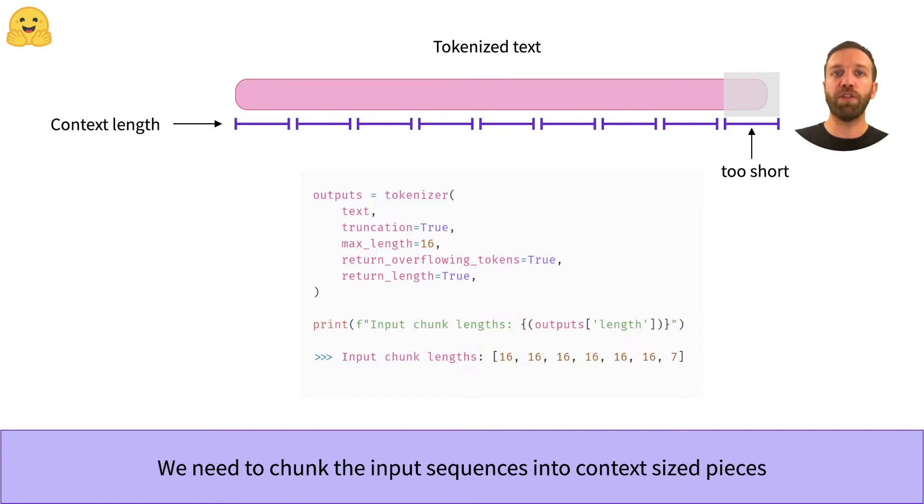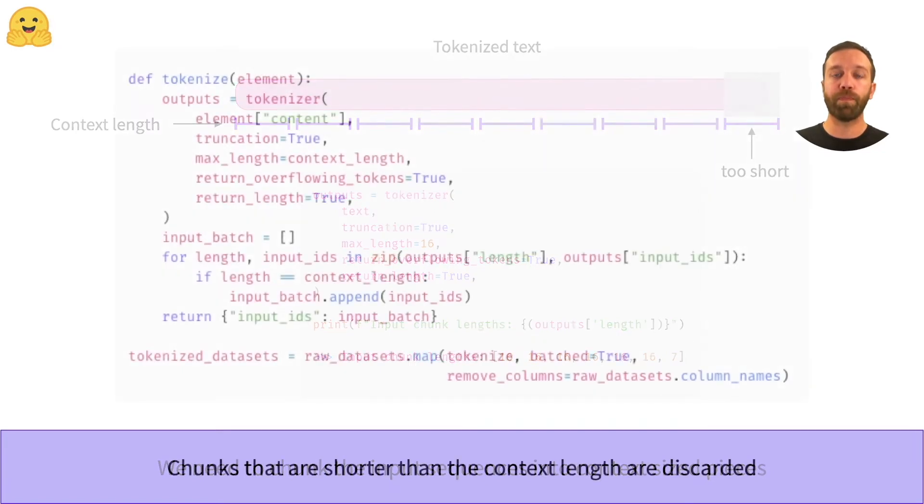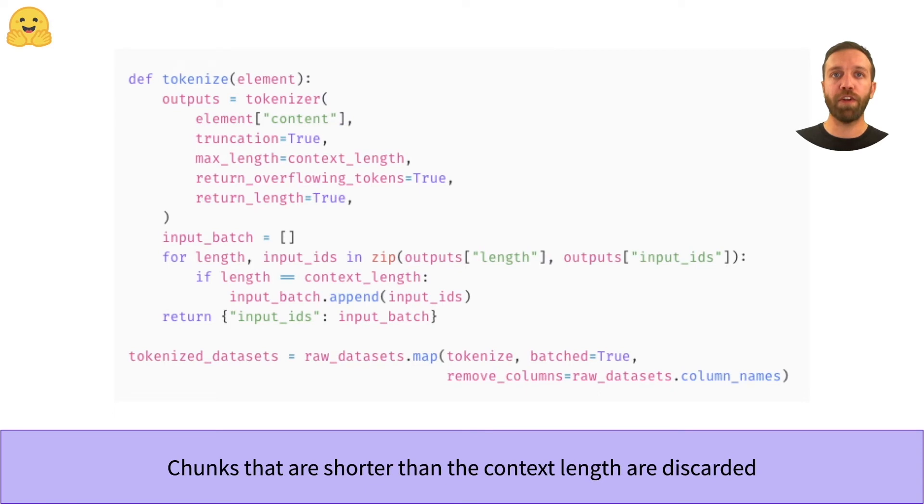This function shows all the steps necessary to prepare the dataset. First we tokenize the dataset with the flags I just mentioned.